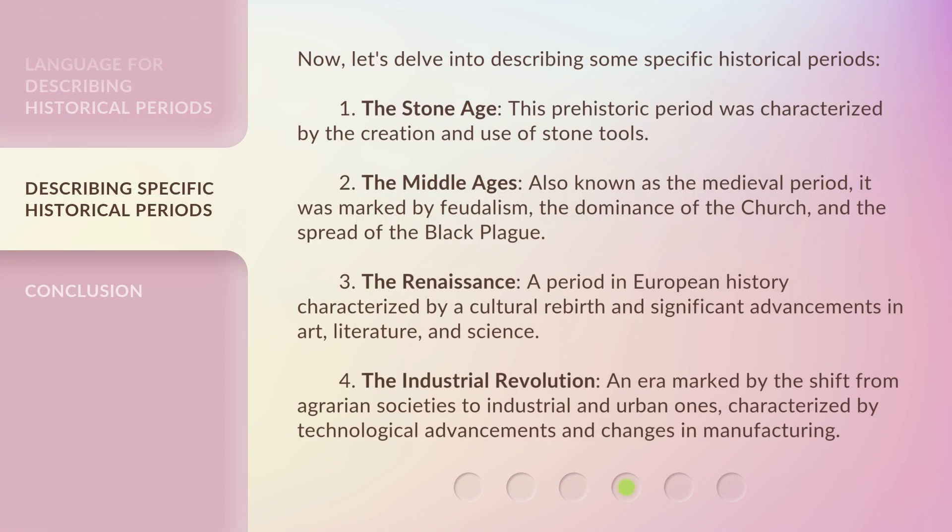Now let's delve into describing some specific historical periods. First, the Stone Age — this prehistoric period was characterized by the creation and use of stone tools. Second, the Middle Ages, also known as the medieval period, was marked by feudalism, the dominance of the church, and the spread of the Black Plague.